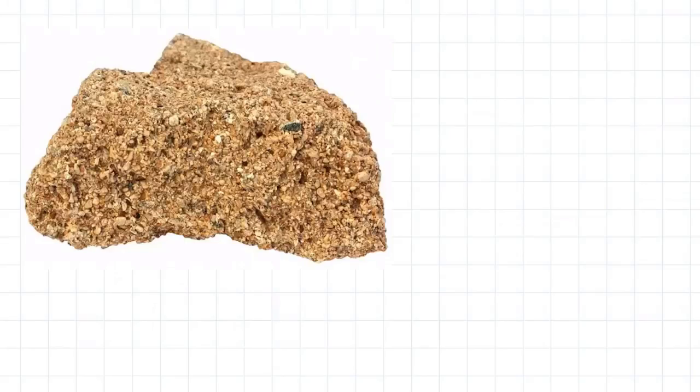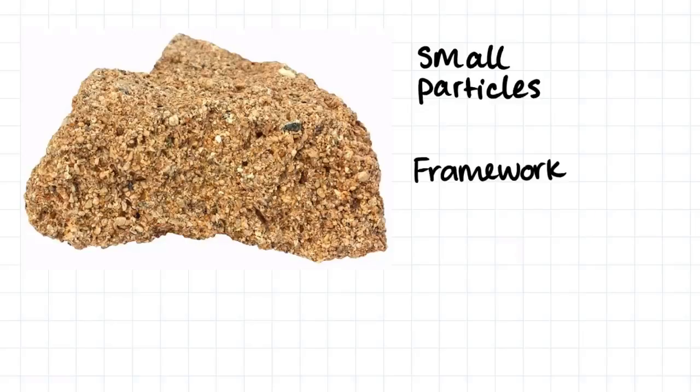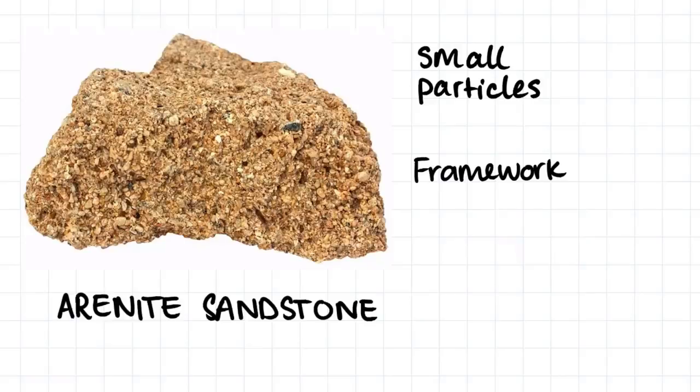Here we have another sample. I would say that this sample has quite small particles that we can easily see with the naked eye. We can also see that each grain is butted up against another grain and there is not much matrix visible. Therefore, I would call this rock framework supported. Because of the sand-sized particles and the fact that it is framework supported, I would call this rock an arnite sandstone. I would also call this rock a lithic sandstone because it is made up of lots of different types of rock.